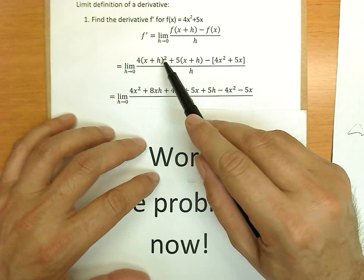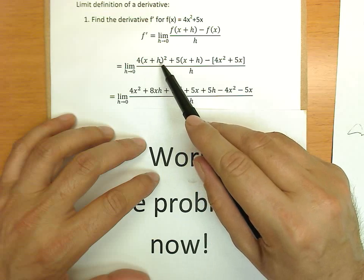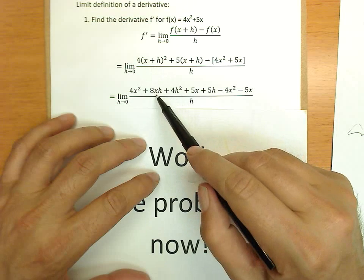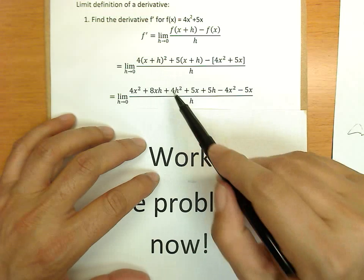And (x + h) foils out. (x + h)² is x² + 2xh + h². Multiplying the 4 through, we get 4x². The 2xh becomes 8xh and 4h².